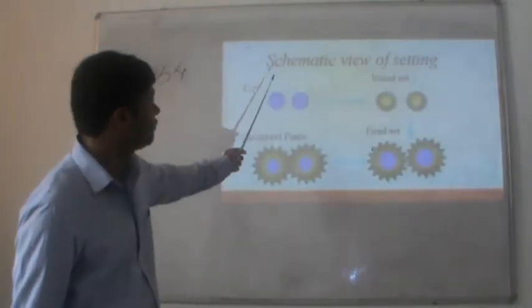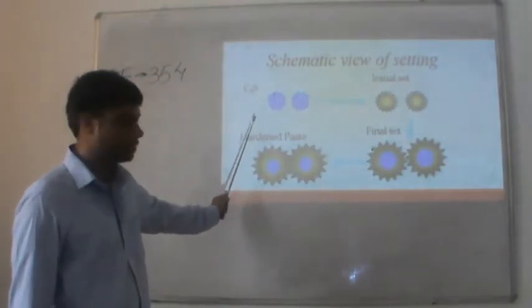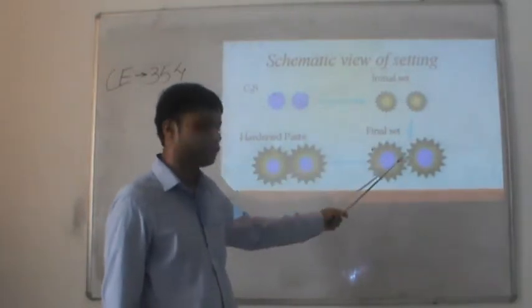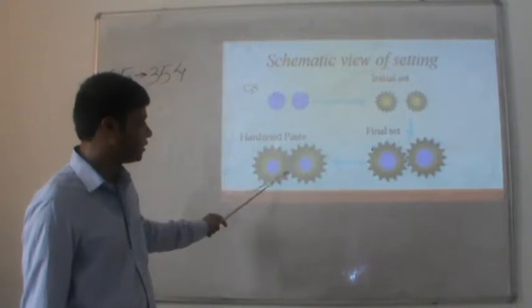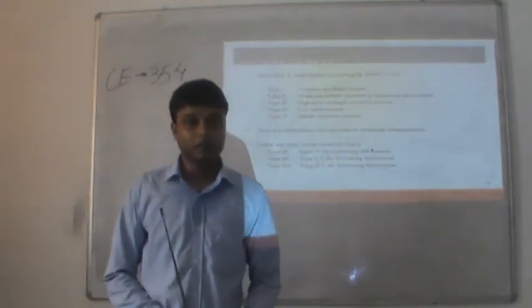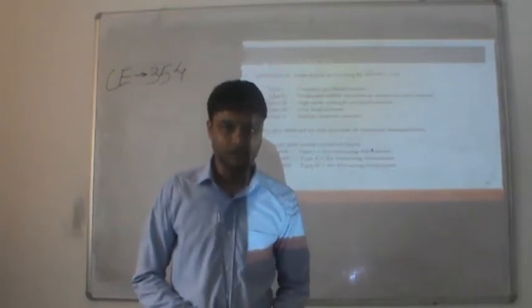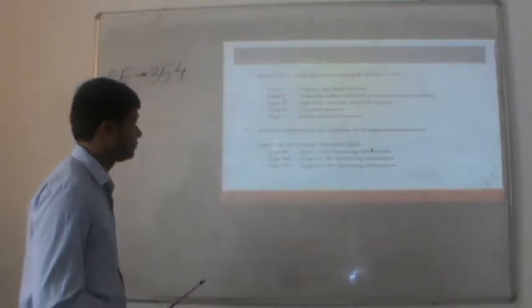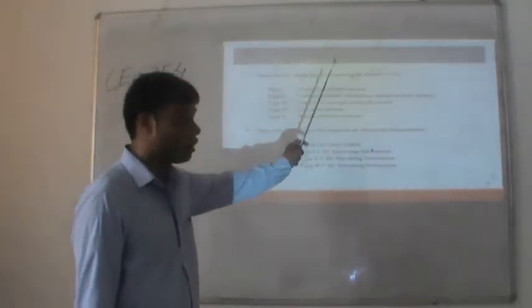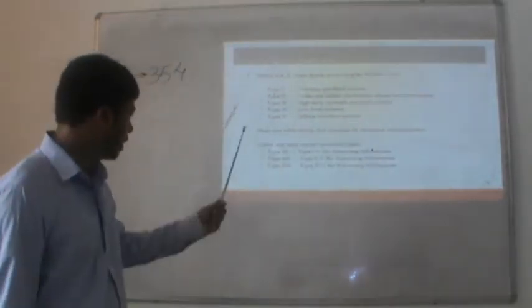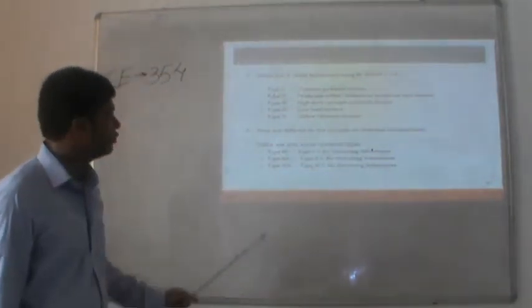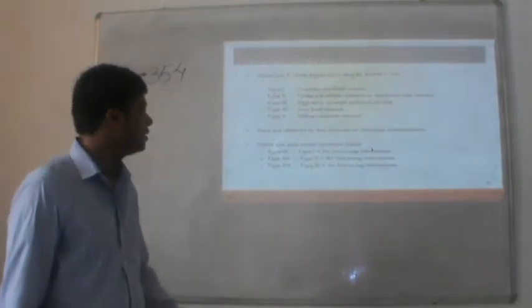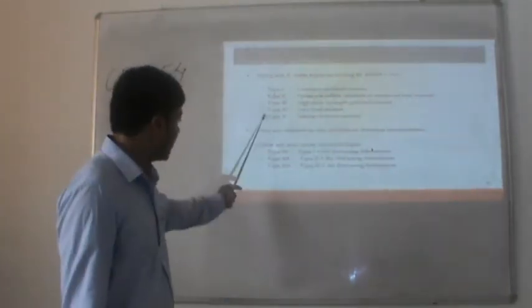This schematic view shows the setting of C3S: initial set occurs first and then hydration products interlock. Now, after exploring the Bogue compounds, we will go to the types of cement. There are 5 main types of cement according to ASTM C150: Type 1 – Ordinary Portland Cement, Type 2 – Moderate Heat/Sulfate Resistant, Type 3 – High Early Strength, Type 4 – Low Heat, and Type 5 – Sulfate Resistant.